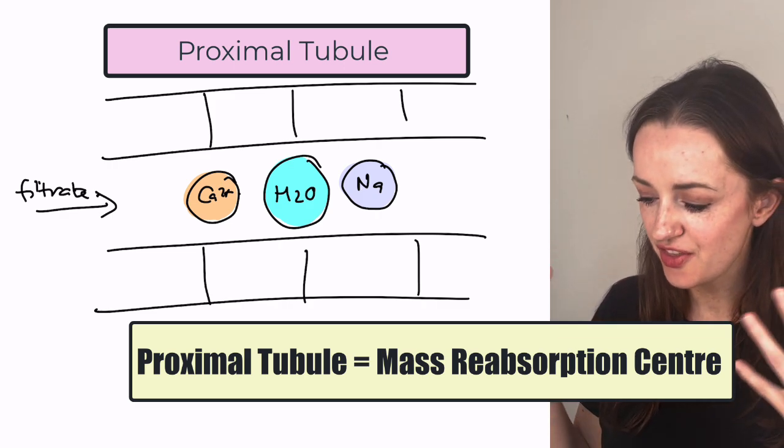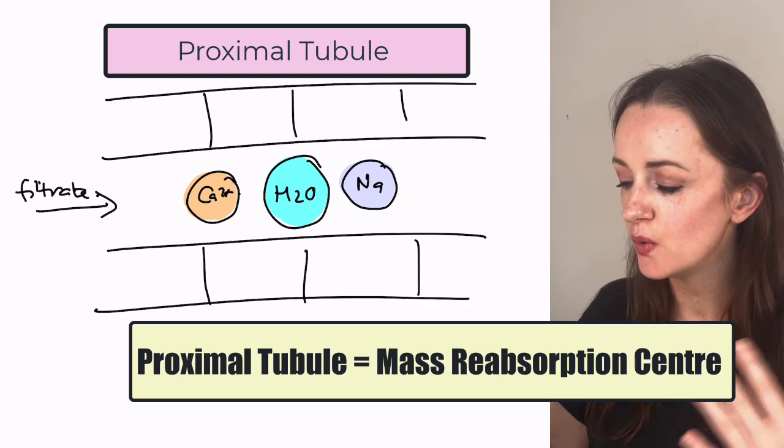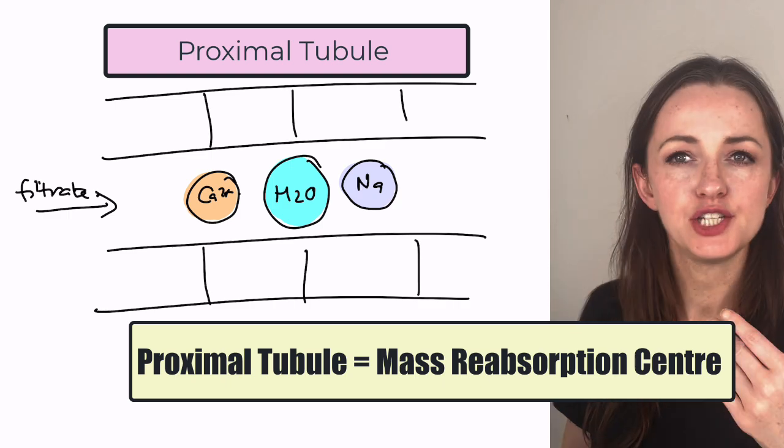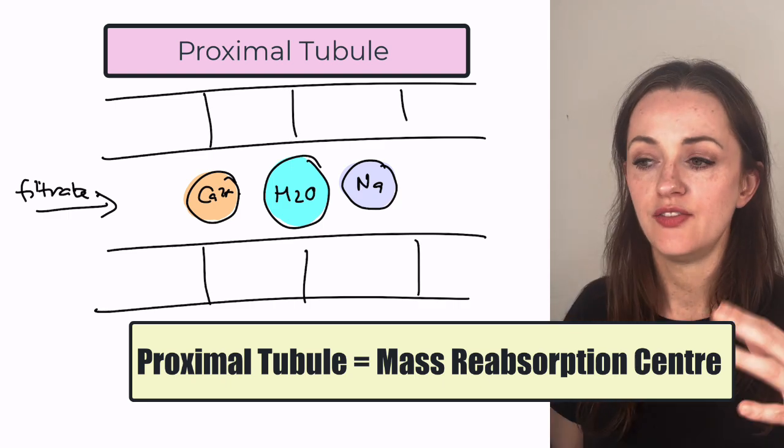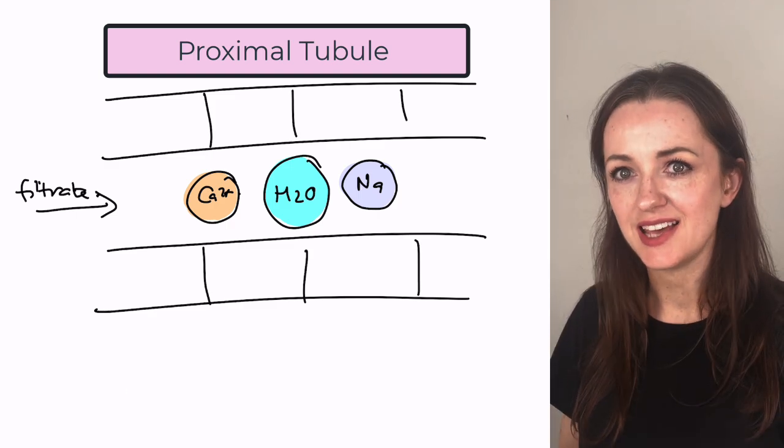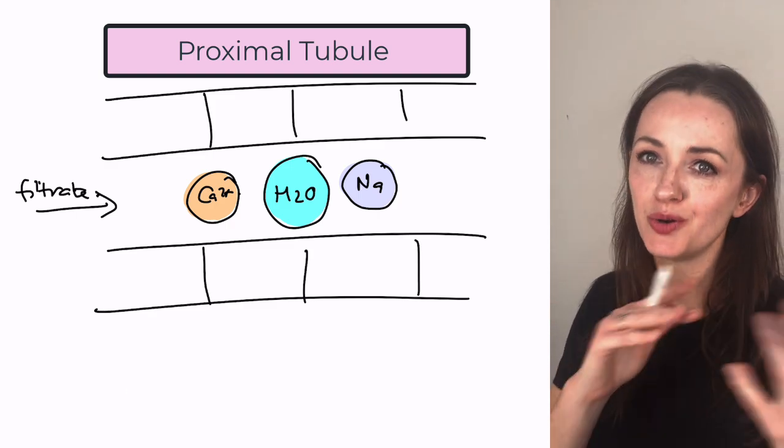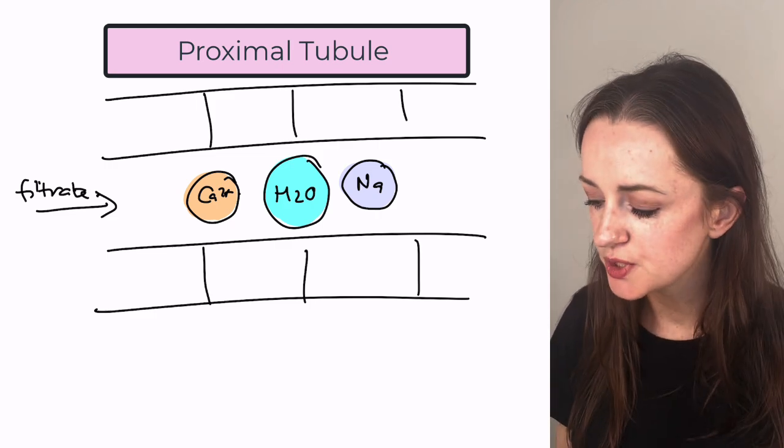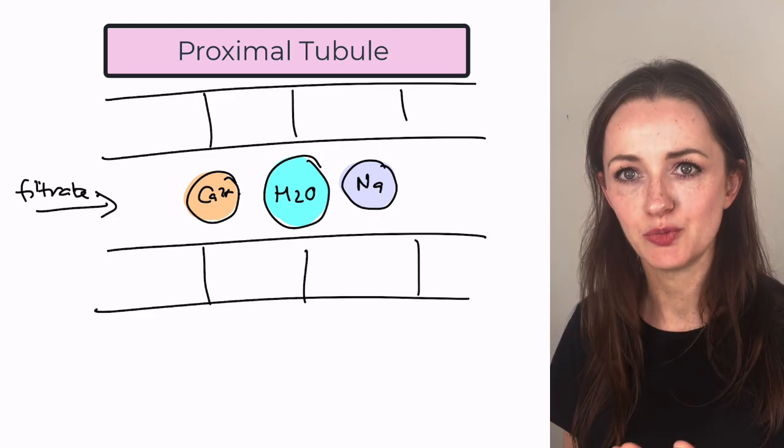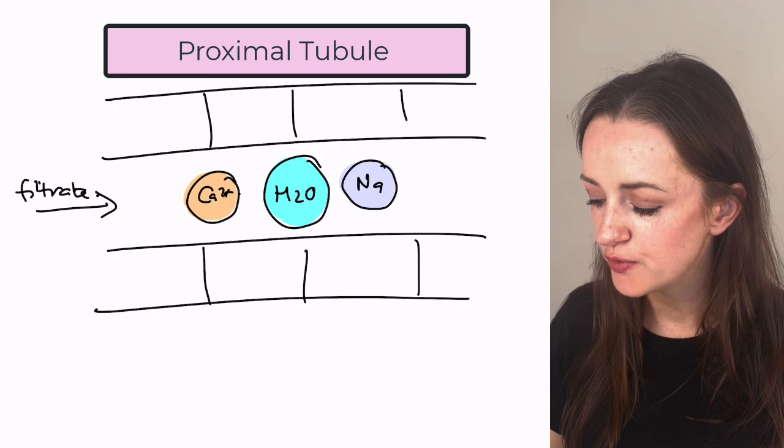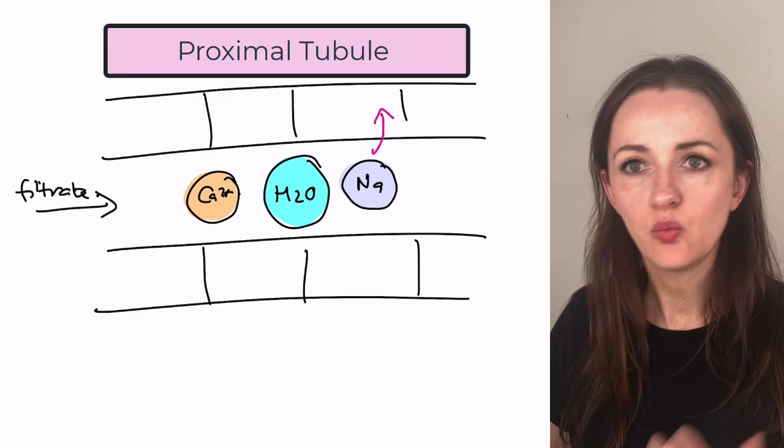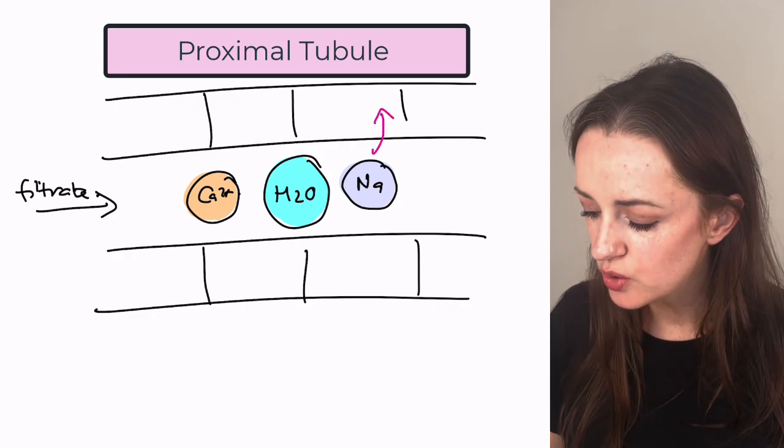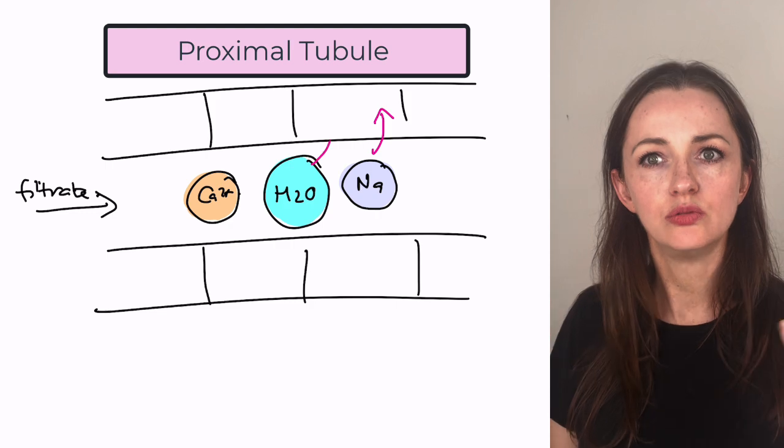So the first thing that the nephron will do in the proximal tubule is just mass reabsorb as much of everything useful that it can possibly see. And sodium is very useful but sodium also helps to transport all the other things, right? Through all those little transporters. So in the proximal tubule there's going to be a lot of sodium reabsorption and water follows sodium wherever it goes. So the water is going to follow the sodium.